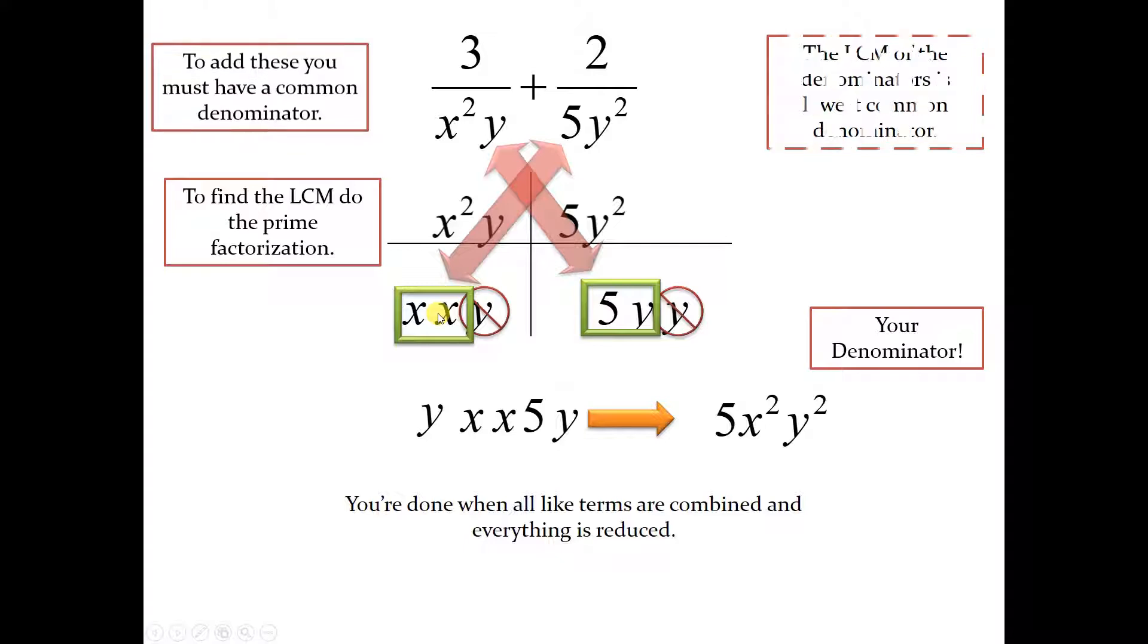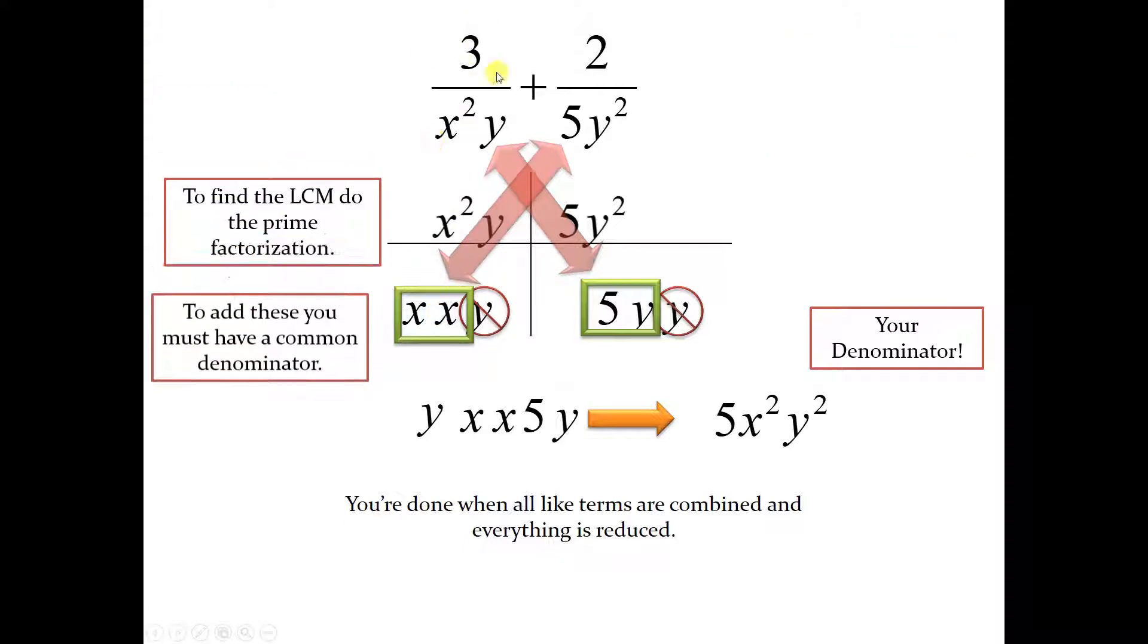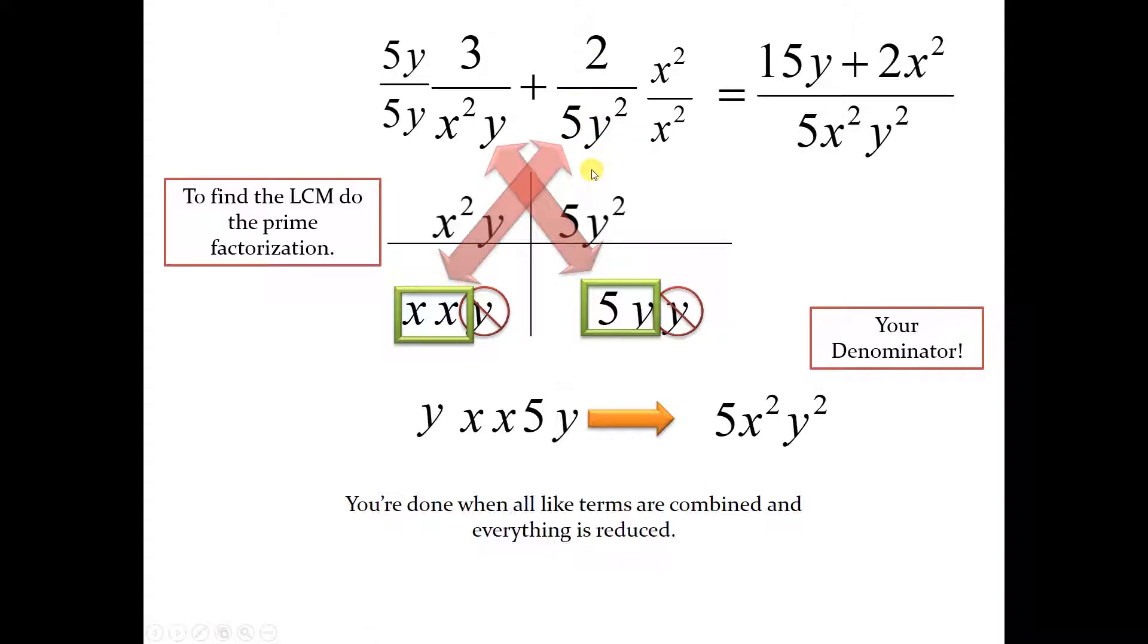So that's what you're going to do. You're going to multiply this fraction over here by 5y over 5y, and this one over here by x squared over x squared, and there you go. Done.